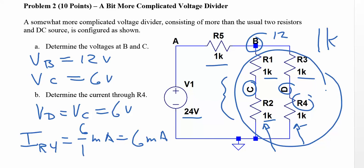And that's basically the entire problem. So this was a little more complicated, a bit more complicated, as it says, but really not much more complicated. So here's the answers for B and C, and here's the current through R4. And that's it for this solution.